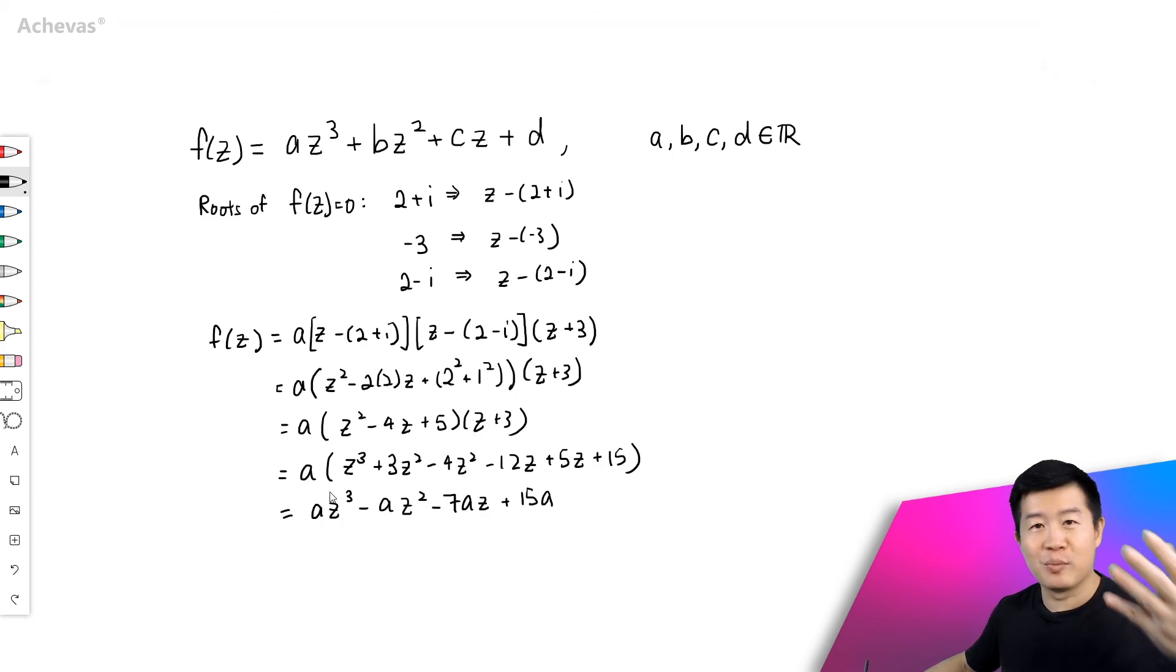And our aim is to actually try to match coefficients. So matching the coefficients, we will be able to get the value for b. b matching the coefficient of z squared to z squared will be minus a. And for c, z matching to z, c is going to be equal to minus 7a. And of course, for d, the term that is independent of z will be 15a.